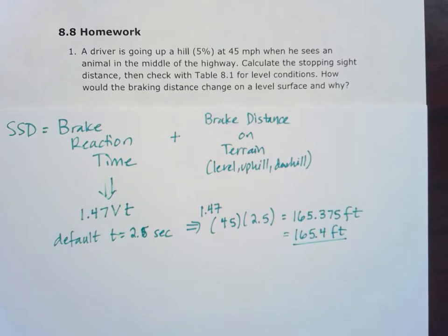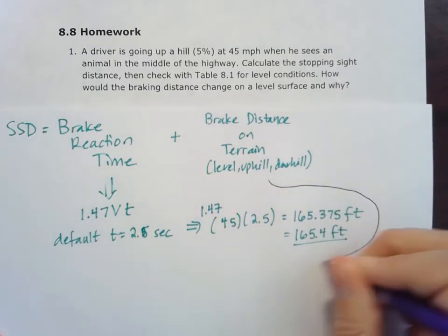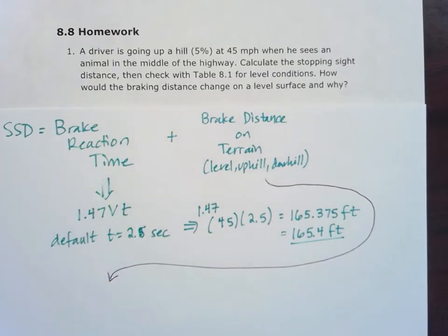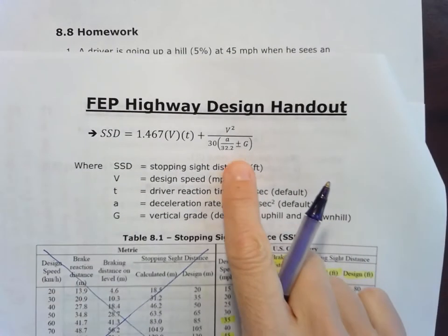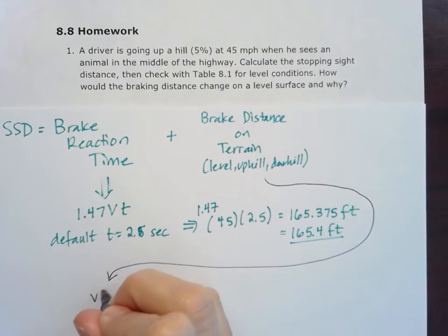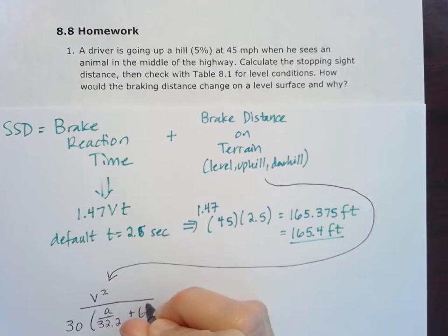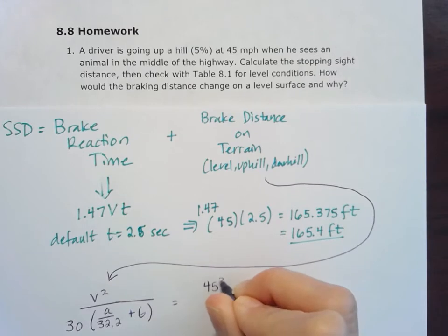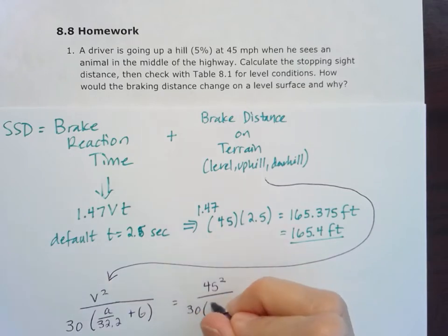Now the second part, we have the brake reaction distance. So that second component, like we saw from our formula, is going to include the grade as well. So we'll have V squared over 30, which is another conversion factor. We have an A, which is the deceleration rate over 32.2. And in this case, we'll have plus our grade because we're going uphill. So again, our V is 45. Our A is a default deceleration rate, which we're going to use as 11.2. Those units will cancel out with a 32.2. And then we'll add that grade of 5%.